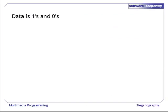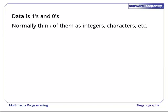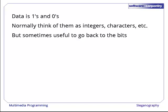It's commonplace to say that data is just ones and zeros, but what does that actually mean? We normally think of those ones and zeros as integers, characters, and so on, but that's our interpretation. There's nothing intrinsic to a particular one or zero that says I'm part of a character.